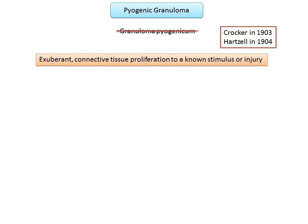The term pyogenic granuloma or granuloma pyogenicum is a misnomer in that it is not pus-producing and it does not represent granulomatous inflammation, though being a misnomer it is quite frequently used even today.